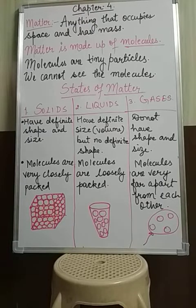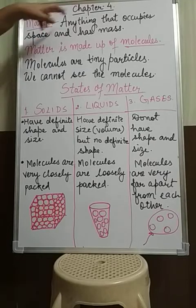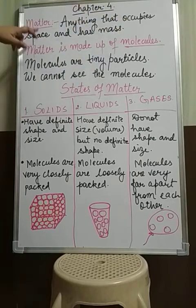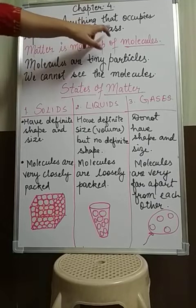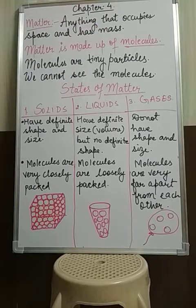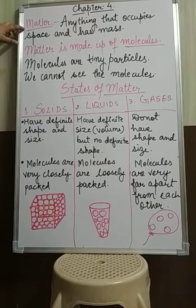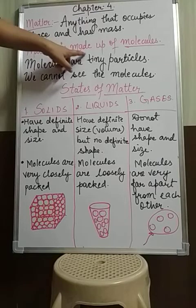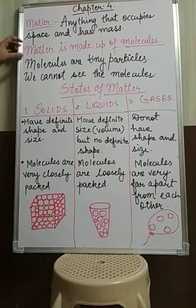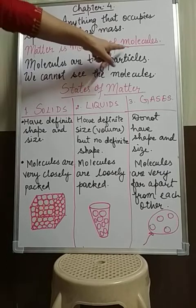So let us first learn what matter actually is. Matter is anything that occupies space and has mass. When you look around yourself, you will see that everything in your surroundings is occupying space and has mass. So what do we call them? They are actually matter. This matter is made up of molecules — whatever we see is made up of molecules.